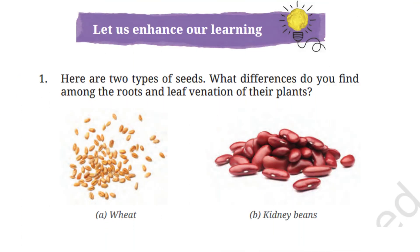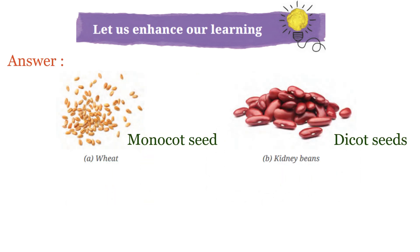Let's read the first question. Here are two types of seeds. What differences do you find among the roots and leaf venation of their plants? The first seed is wheat and the second seed is kidney beans. To compare the roots and leaf venation of wheat and kidney beans, we must first identify what type of seeds they are. We know wheat is a monocot seed and kidney beans are dicot seeds.